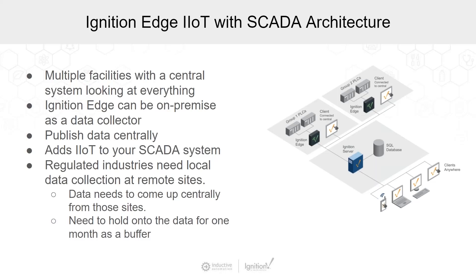The new Ignition Edge enables multiple architectures for different possible situations. The first architecture we're going to look at is Ignition Edge with Central Ignition SCADA. This architecture can have multiple facilities or locations with the Central Ignition Gateway connected to everything, and Ignition Edge on-premise at each site to collect data and publish it centrally.